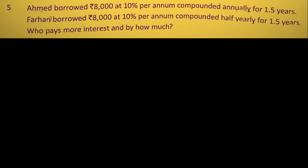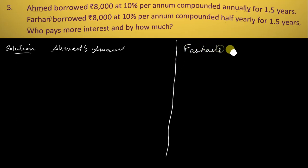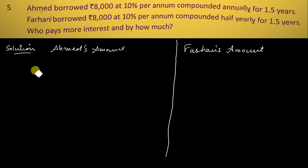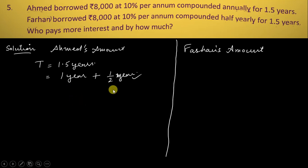We will calculate their amounts separately — Ahmed's compounded annually and Farhan's compounded half-yearly. Since Ahmed's is compounded annually with time 1.5 years, that means one full year and then a remaining half year (6/12). So for the first 1 year we calculate using the compound interest formula, and for the remaining half year we calculate simple interest separately.